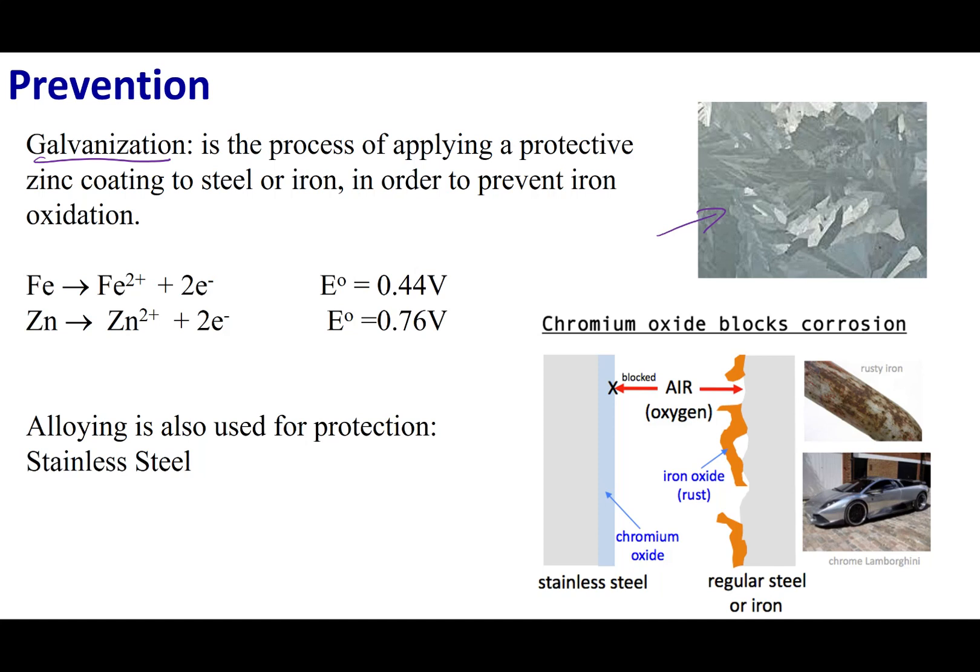Now, another way to protect iron or steel from rusting is to use something called stainless steel. Let's take a look at regular steel. What happens with regular steel is that it gets exposed to air or oxygen, and it rusts. And that rust is the iron oxide. So you might see that orange color. And one of the problems with rust is it's a flaky material.